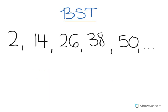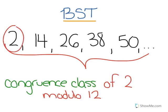We'll look at one more concept before we go. We've already said that all of these numbers are congruent modulo 12, and the number we started with was 2. All of these numbers are part of the congruence class of 2 modulo 12 — they're all congruent to each other modulo 12. And there are many more positive and negative numbers that are congruent to 2 modulo 12 as well.